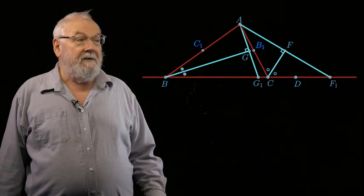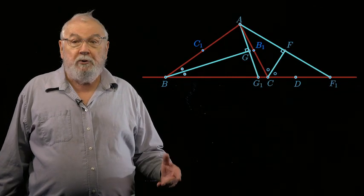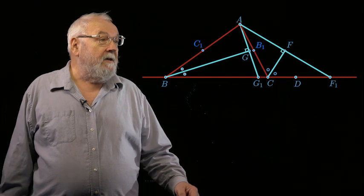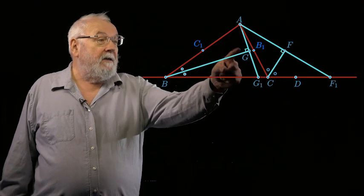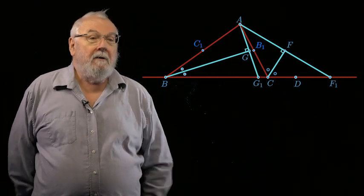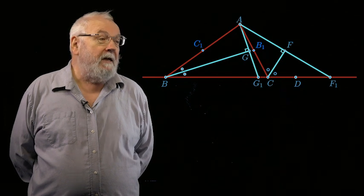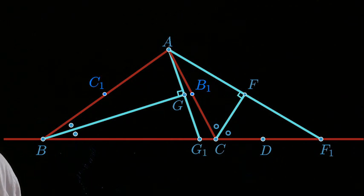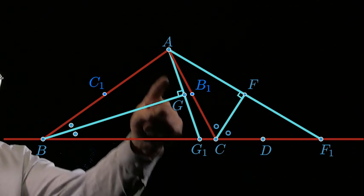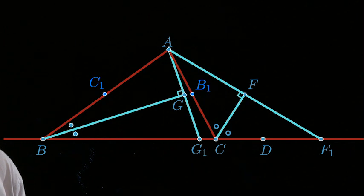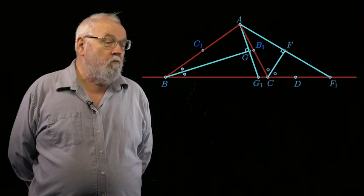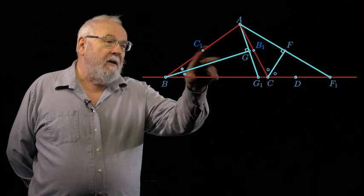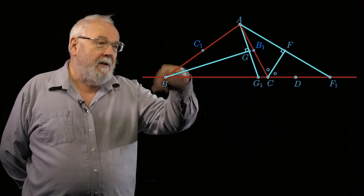So here's the idea. Produce, or some people say extend, AG until it hits the bottom line BC at G1. And do the same thing with the point F, produce AF until it hits the bottom line BC at F1.